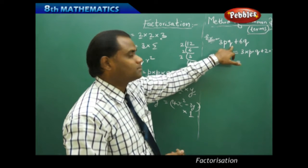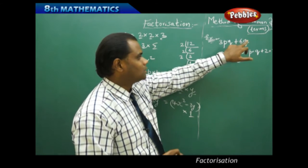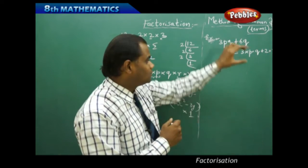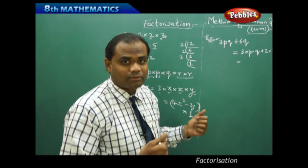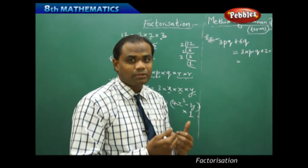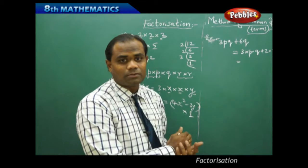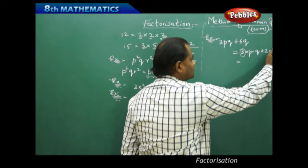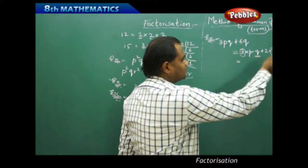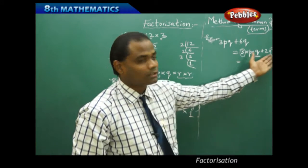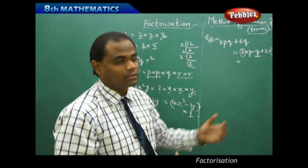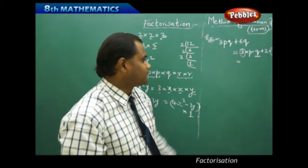The first term 3pq can be written as 3 × p × q, and the second term 6q can be written as 2 × 3 × q. We split 6 into its least primes, 2 × 3, and write q separately. After splitting each term into its most possible factors, we identify the common terms. Here, 3 is common in both terms, and q is also a common factor between them. These common terms come out of the bracket, and the remaining terms go inside the bracket.